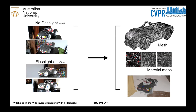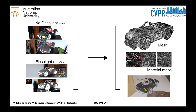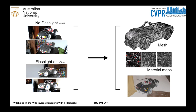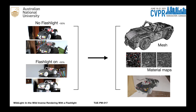Our method recovers object mesh and material maps. The input to our system is a set of calibrated images under unknown ambient lighting. We use a co-located camera and flashlight device, such as smartphones, and the flashlight is turned on for about half of the time during the image capture process. We do not require flashlight and non-flashlight images to come in pairs.